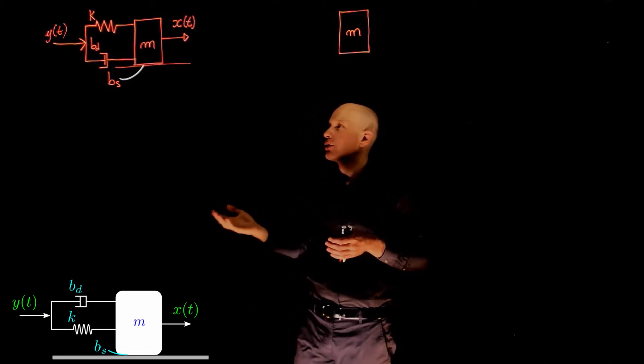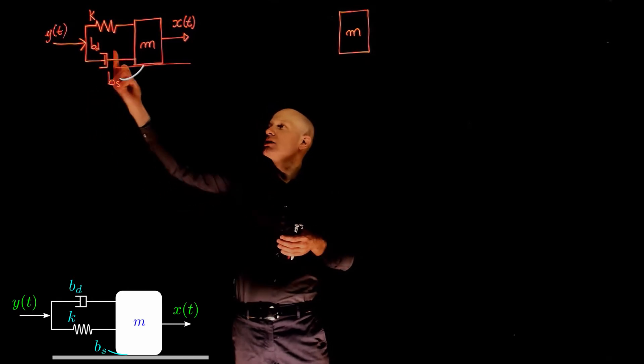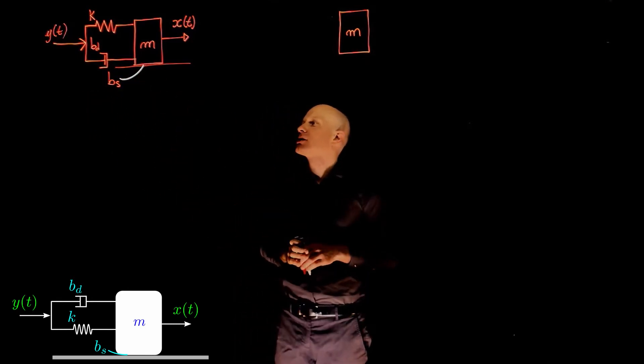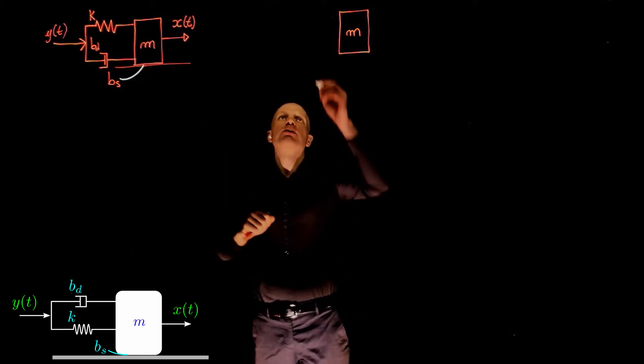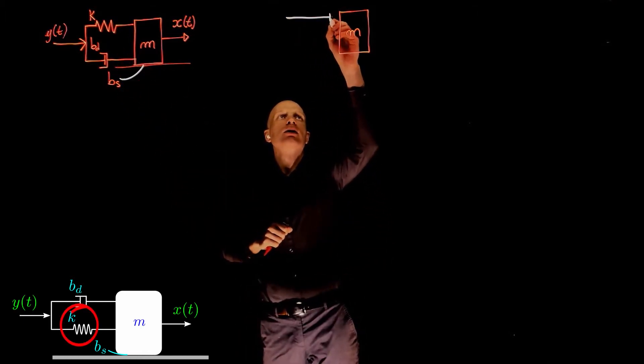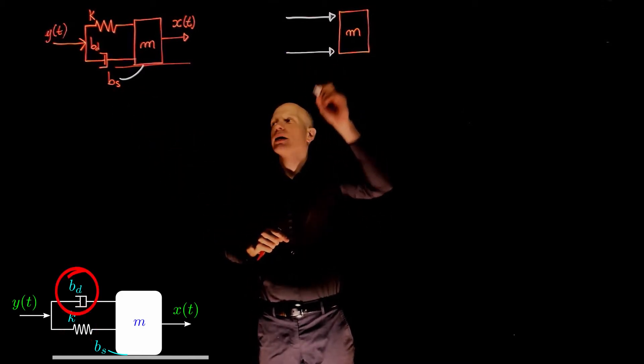Starting with the free body diagram, there are three forces acting on the mass. As we push on the spring on this side, the spring and the damper will push on the mass, which means that the force that the spring applies to the mass goes to the right, so does the force applied by that damper.